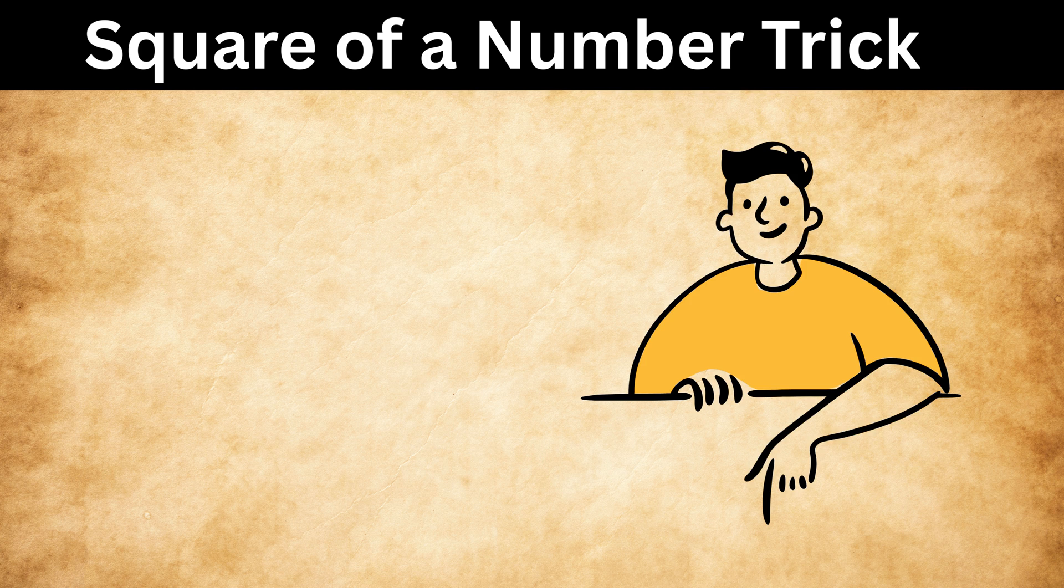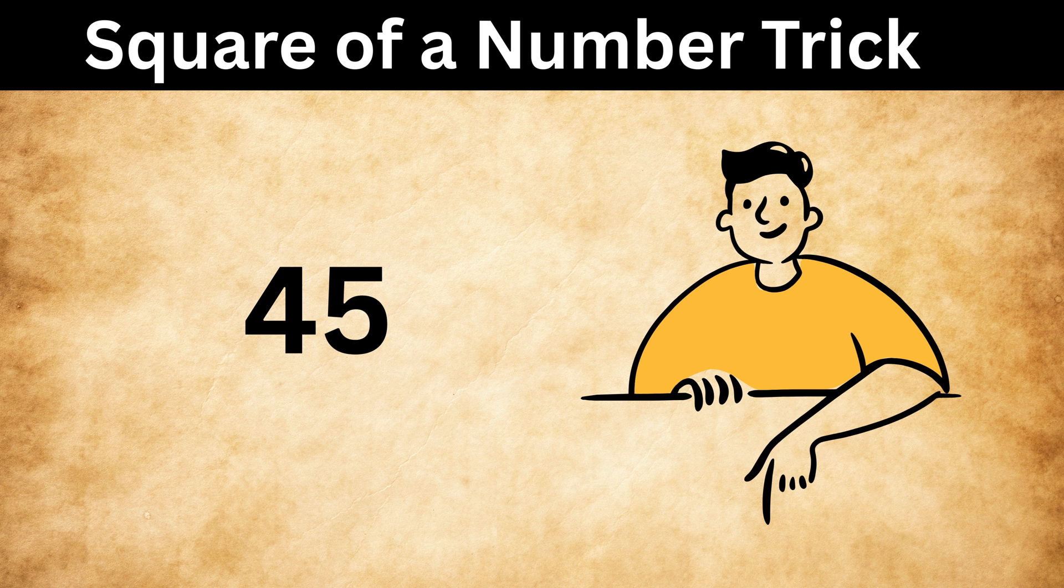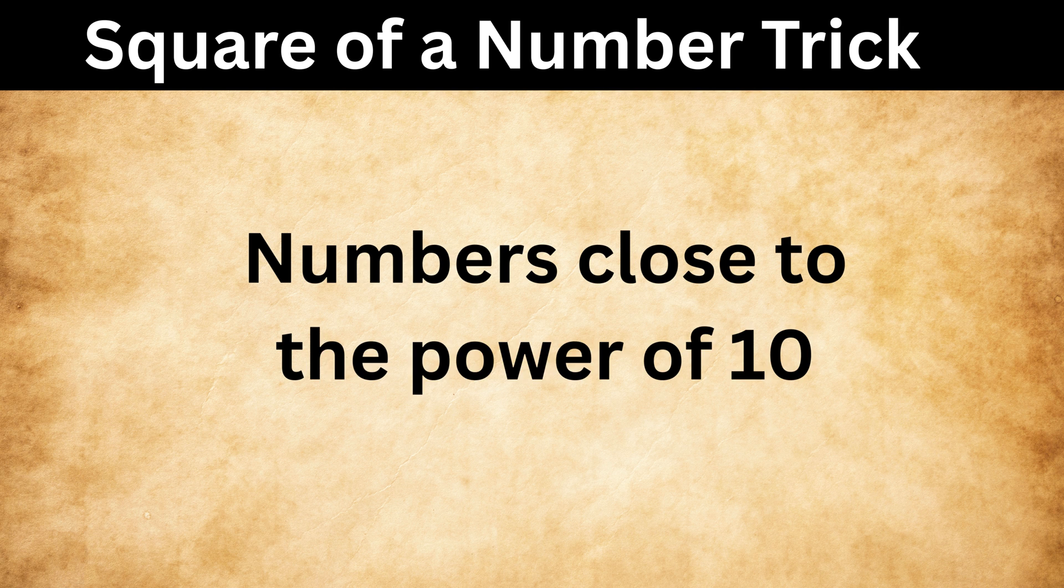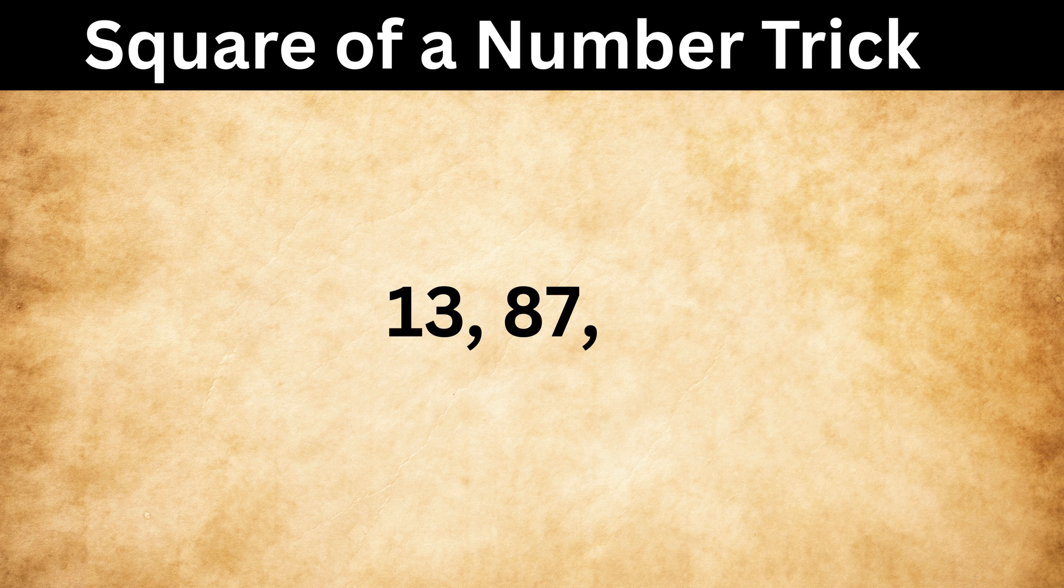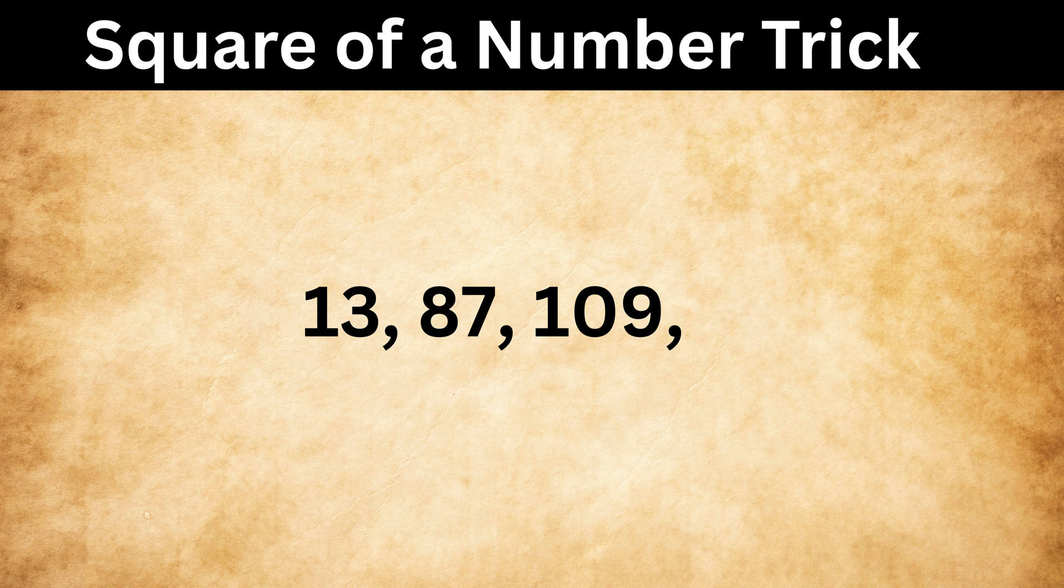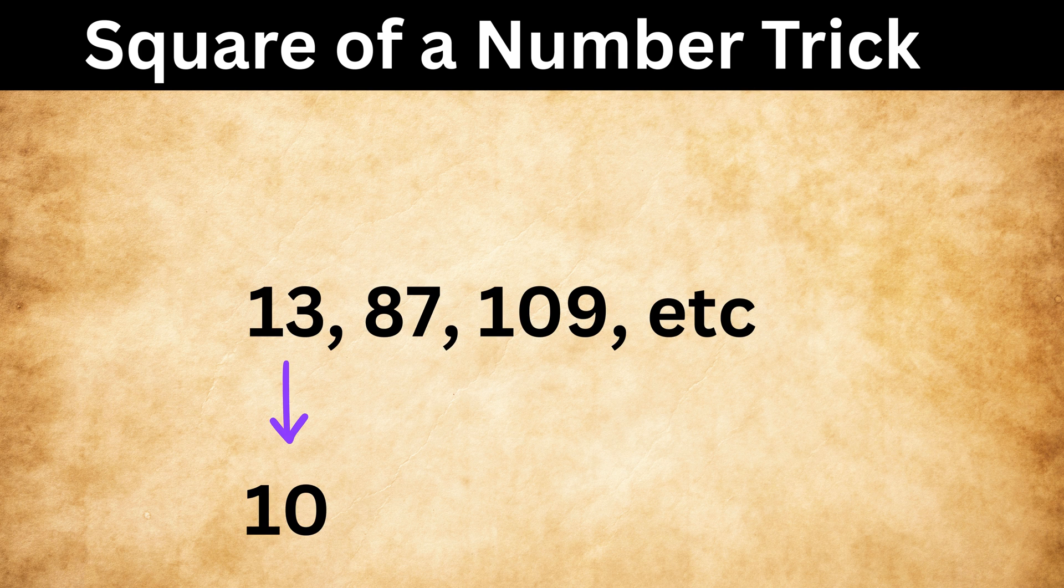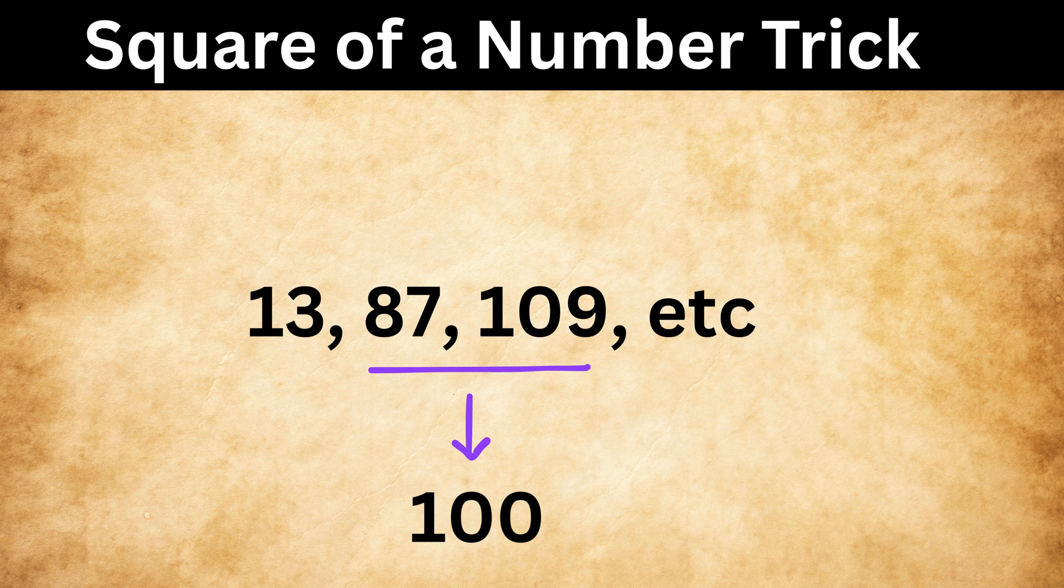Let me know in the comments what will be the square of 45. Now our third trick is based on numbers which are close to the power of 10, like 13, or 87, or 109, and so on. This is close to 10, then both of them are close to 100, right?